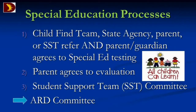The special education process: a student can be identified by the child find team, by a state agency, by parent concerns, by teachers through SST, or basically anybody who has a concern can bring the child up. If it looks like the student needs to go beyond response to intervention, the SST committee meets and the parent has to consent to an evaluation. At that point, the student support team turns into our committee.